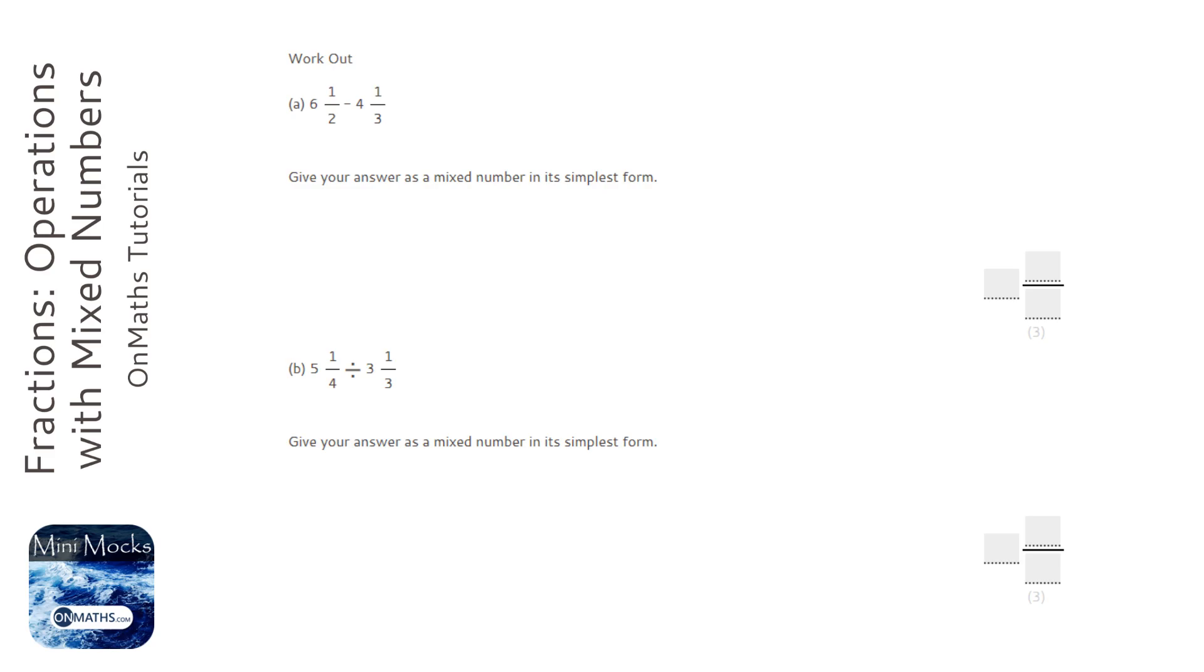So here we've got two mixed numbers. We've got six and a half and we've got four and a third. So we need to convert these into what we call improper fractions, top-heavy fractions. And we do that by timesing the big number by the bottom number, then adding it to the top. And we do that for both of these.